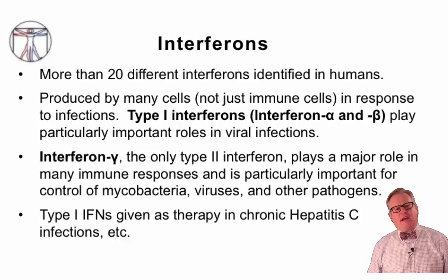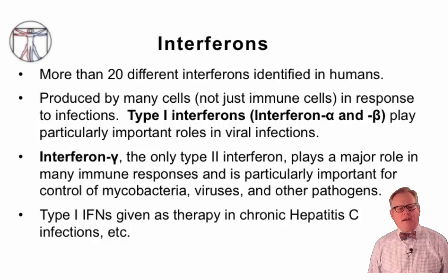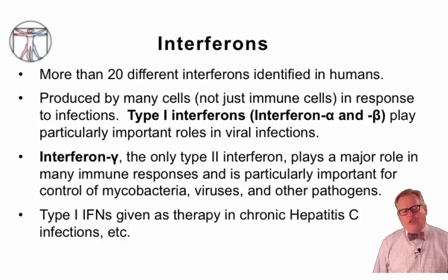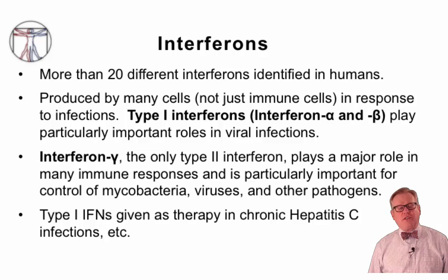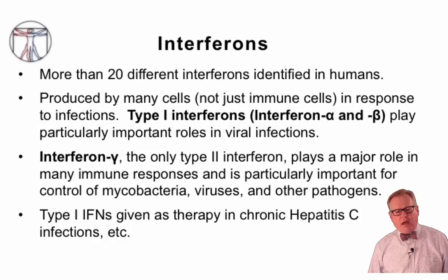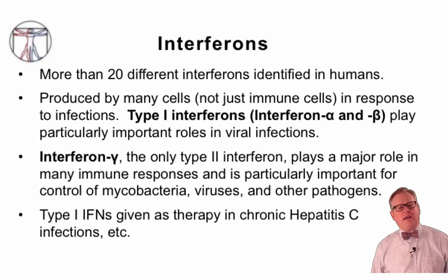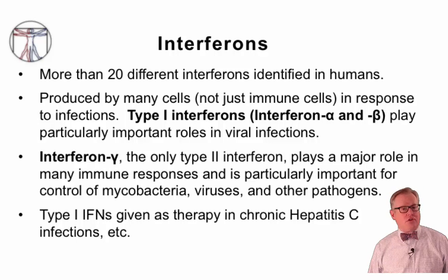Let's talk about some specific cytokine families. First, the interferons — a very large family with more than 20 different interferons identified in humans. The most important are the type 1 interferons, interferon alpha and beta, and the type 2 interferon, interferon gamma. Type 1 interferons play a particularly important role in viral infections and are made by a large variety of cell types when infected with viruses. Interferon gamma also plays a major role. Both of these cytokines are used therapeutically to treat patients with certain types of chronic viral or mycobacterial infections.